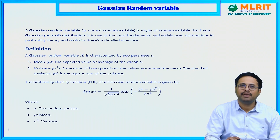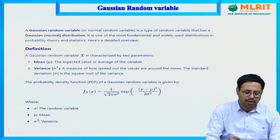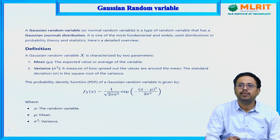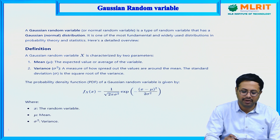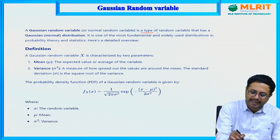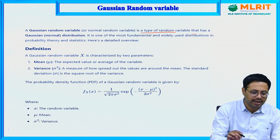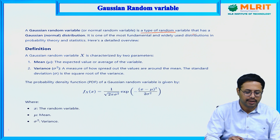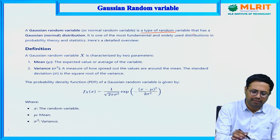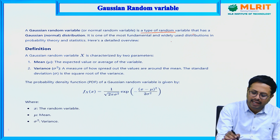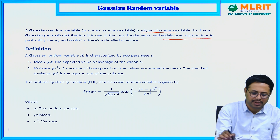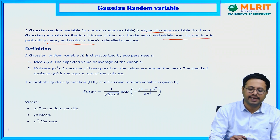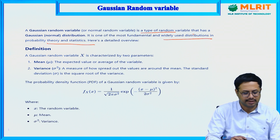What is a Gaussian random variable? A Gaussian random variable is also known as a normal random variable. It is a type of random variable that has a Gaussian distribution. It is one of the fundamental and widely used distributions in probability theory and statistics.